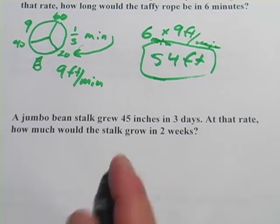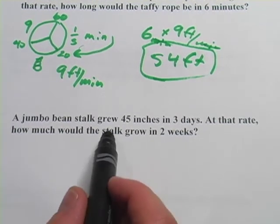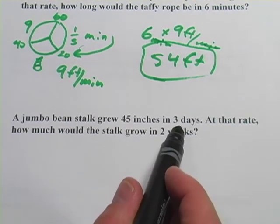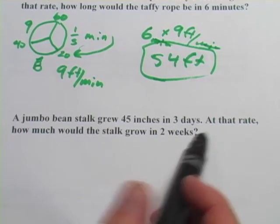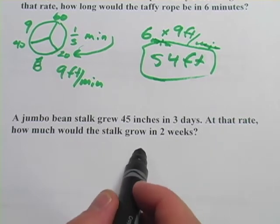Let's look at one more. It says, a jumbo beanstalk grew 45 inches in three days. Wow, that's some beanstalk. At that rate, how much would the stalk grow in two weeks?